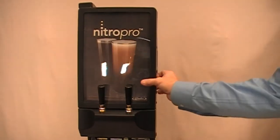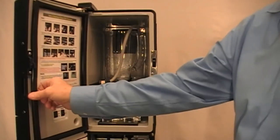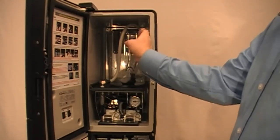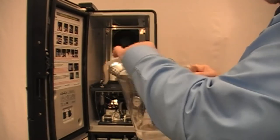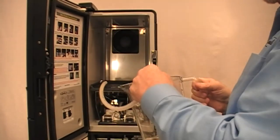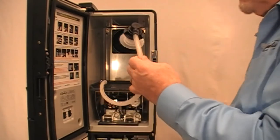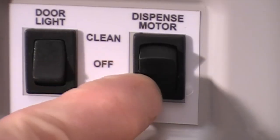After the 20 minutes, open each of the dispense taps separately and again pour another quarter of a gallon of sanitizer. Then remove the bib adapter by rotating counterclockwise and place the dispense motor switch on the inside door panel back to the on position.